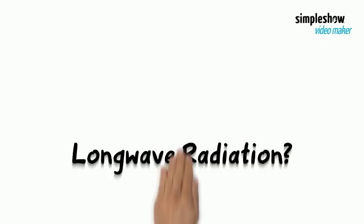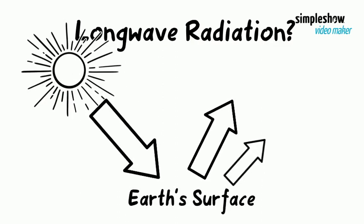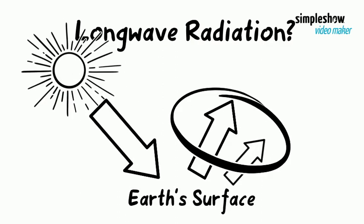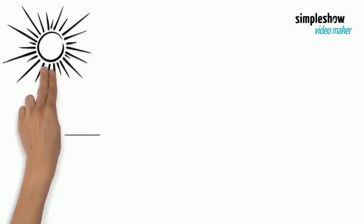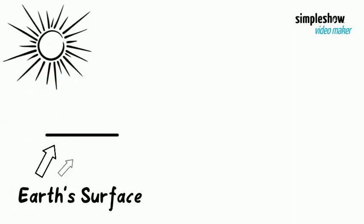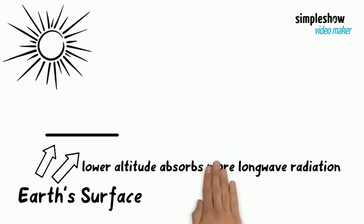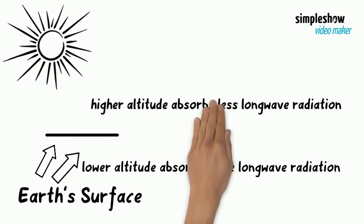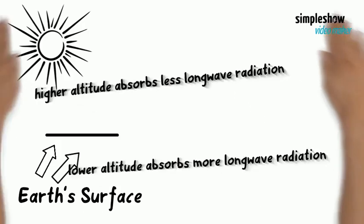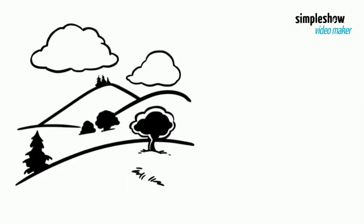The second reason has to do with longwave radiation. What is longwave radiation? It is heat from the Sun that is reflected back from the Earth's surface. Air near the Earth's surface absorbs more heat from longwave radiation than air at higher altitudes. Hence, lower altitudes are warmer than higher altitudes.